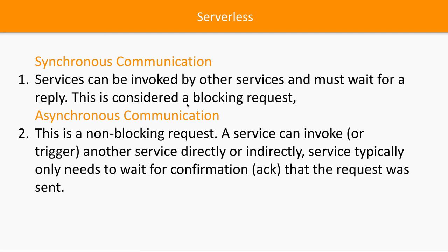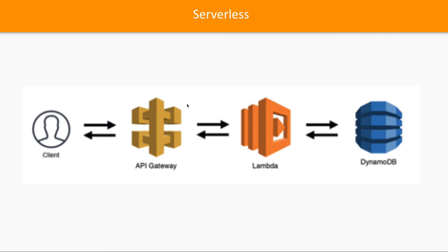The actual processing of an asynchronous request happens later over time. In the AWS world, lambdas are functions that can be written in any programming language and are responsible for executing business logic. Before serverless, we deployed applications onto EC2 instances which we had to manage — scaling up and down. But if you just want to focus on business logic, you write Azure Functions, AWS Lambda functions, or Google Cloud Functions.